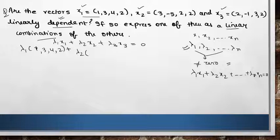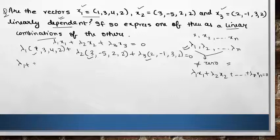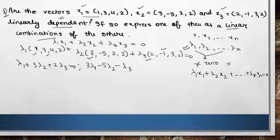So lambda 2 x2 is (3, -5, 2, 2) plus lambda 3 x3 which is (2, -1, 3, 2) equals 0. If you take lambda 1 plus 3 lambda 2 plus 2 lambda 3 all together, and then 3 lambda 1 minus 5 lambda 2 minus lambda 3 equals 0.